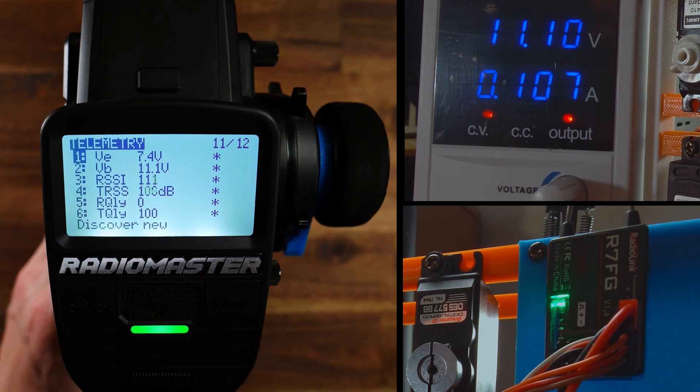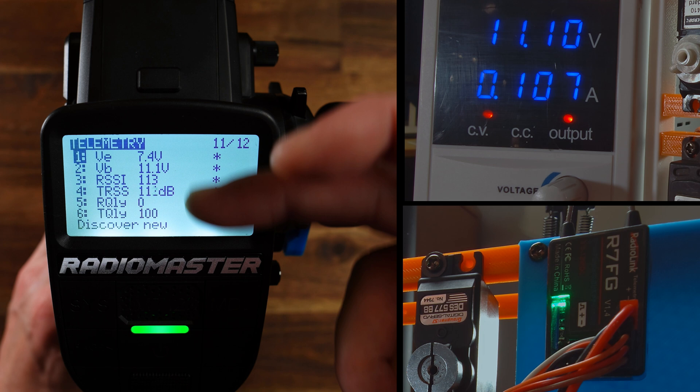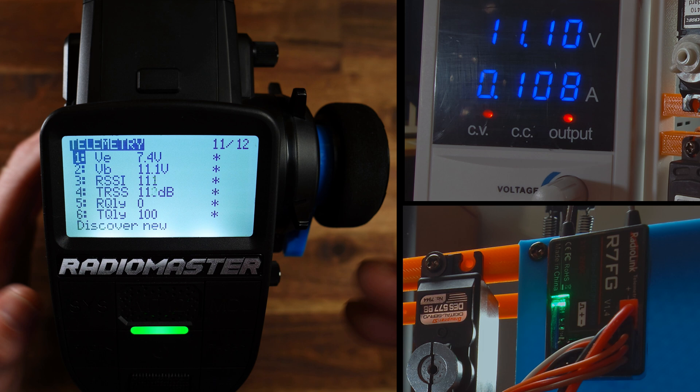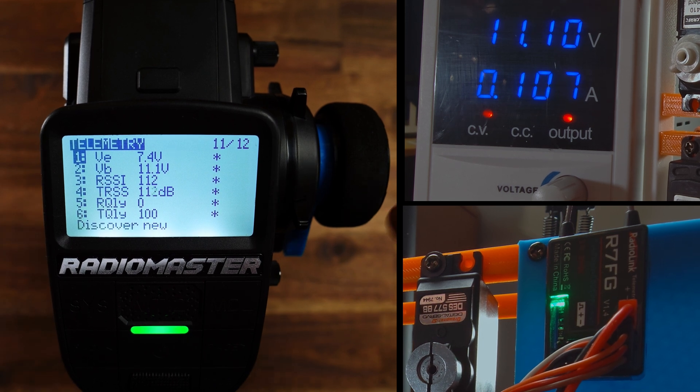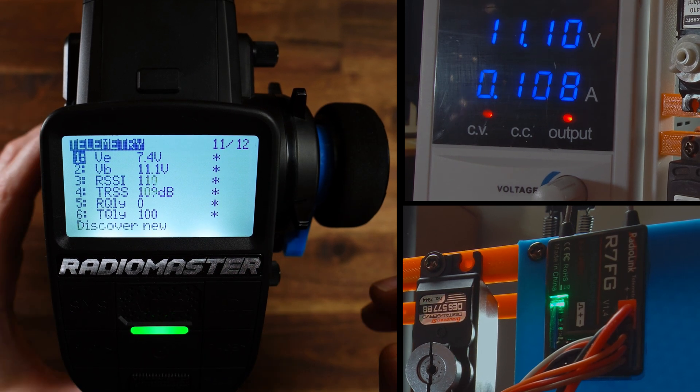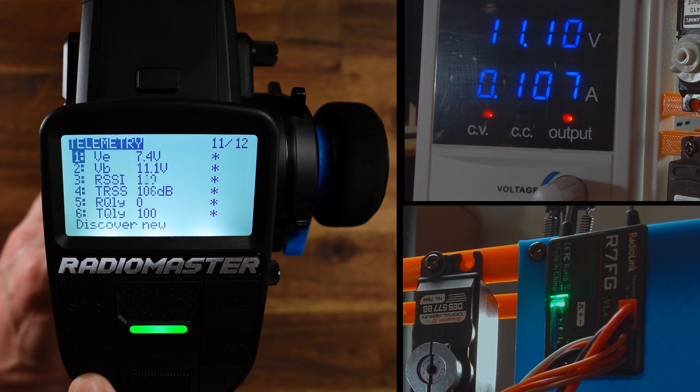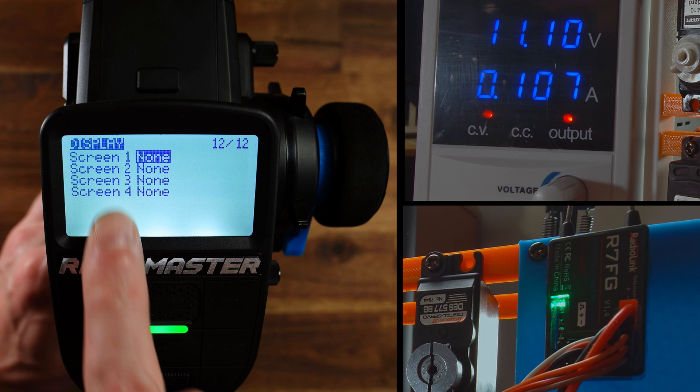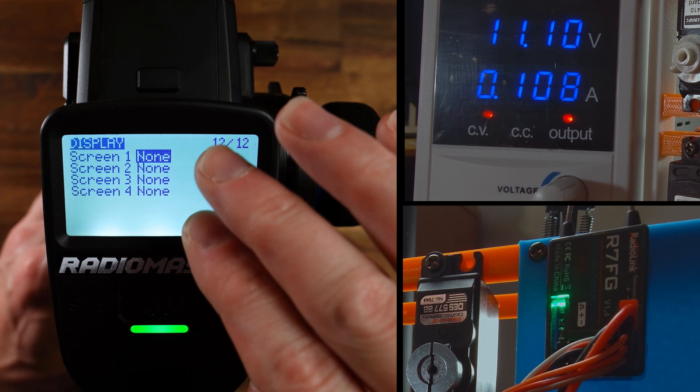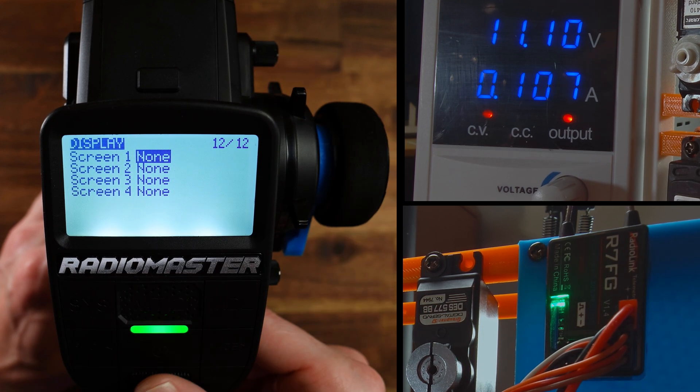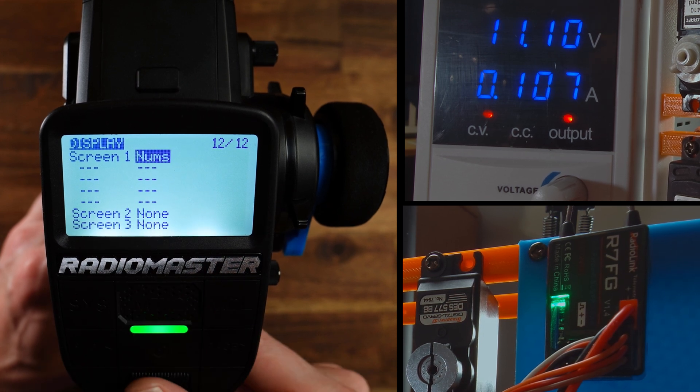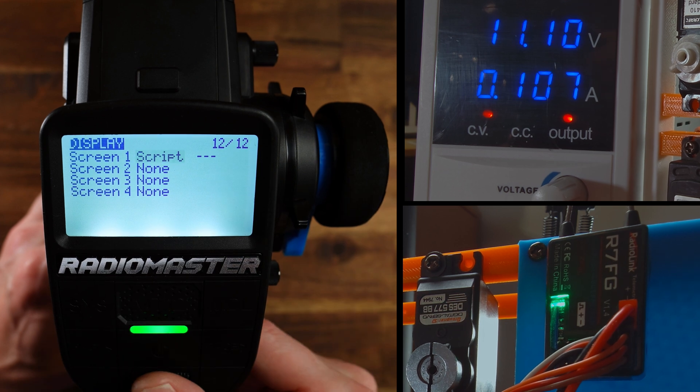Now how can we display these values? I mean yes, you see it here but usually you want to have a special page where you can configure some output information and this you do here on this page, on this display page you can define or configure four different screens and every screen can show numeric values or bar graphs or script output.